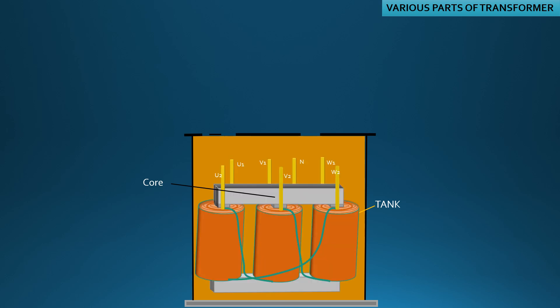These are windings. HV winding is wrapped over the LV winding. LV winding, being low voltage, has less likelihood of occurrence of fault and requires less insulation, and is thus kept nearer to the core.